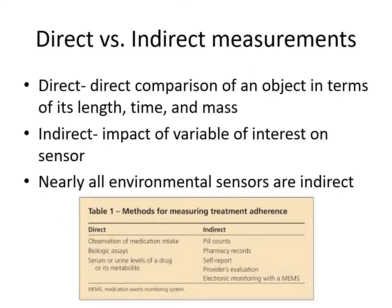Let's shift to measurement systems and different kinds of sensors. Start by thinking about the different types of measurements: direct measurements where we're actually looking at an object in terms of length, time, and mass. Most of the time in environmental sensing, we're dealing with indirect sensors — where the impact of the variable of interest on a sensor is measured, rather than the characteristic of the environment directly.